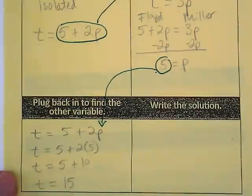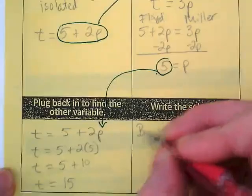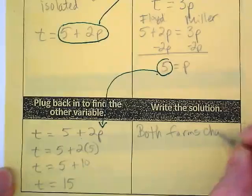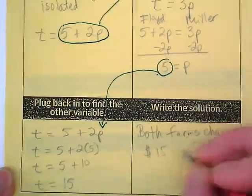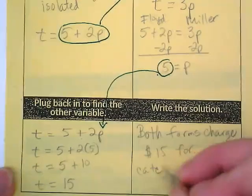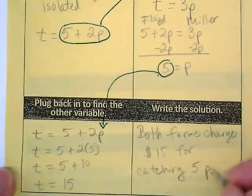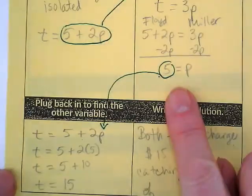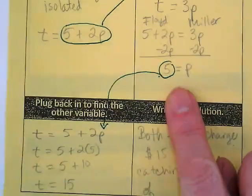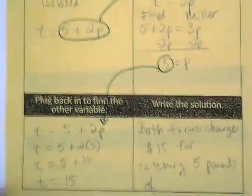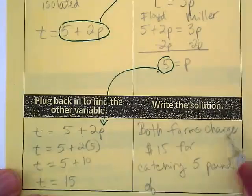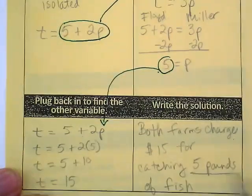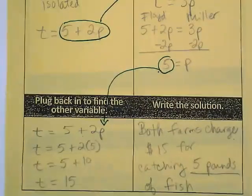So then we have to think about what does that mean in terms of our question. Here's the statement. Both farms charge $15 for catching 5 pounds of fish. So both farms charge $15 for catching 5 pounds of fish. So when you get to 5 pounds, that's when these two farms are equal.